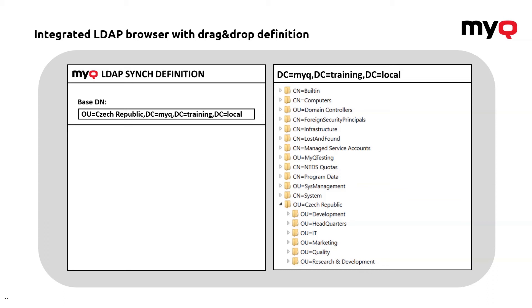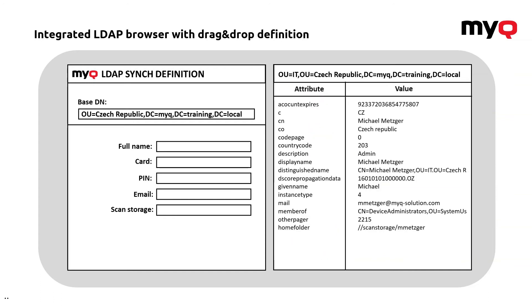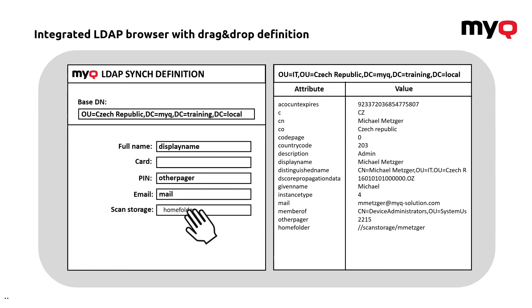The next step is the definition of the actual user properties. Same thing — even if you do not understand the whole thing, it's pretty simple. You can find the user here by clicking on the OU, selecting the account, and the system shows you all the available attributes for that user. Once you've got it there, it's just a matter of drag and drop. You just have to find the actual attributes you would like to use for the user account definition and then drag and drop them to the profile definition. The system will automatically go through all the defined users specified by the base DN, check all the attributes, and whatever is found it will automatically put it for that account.